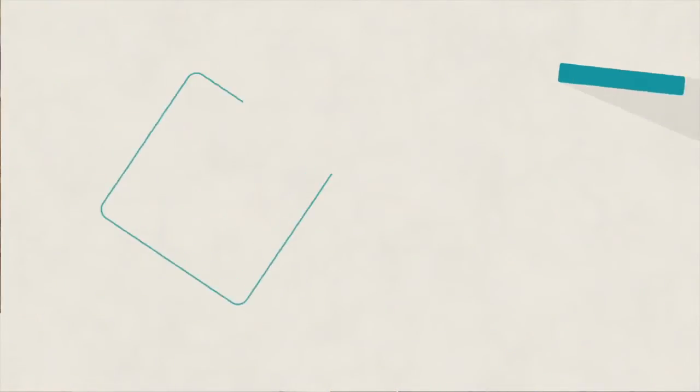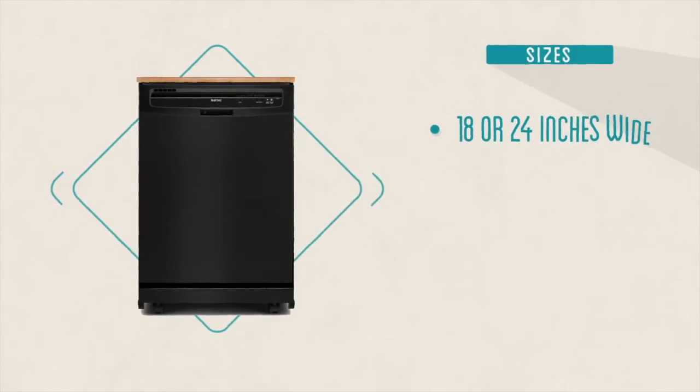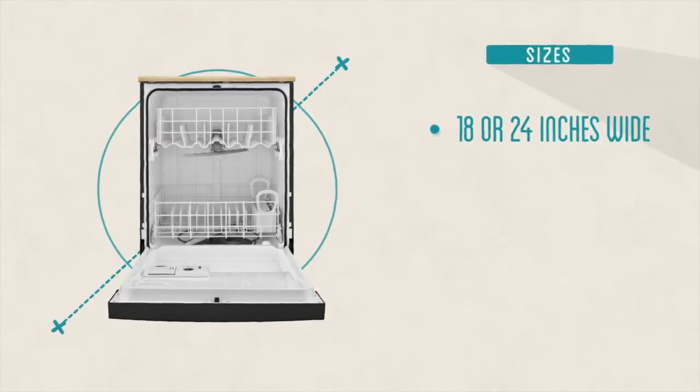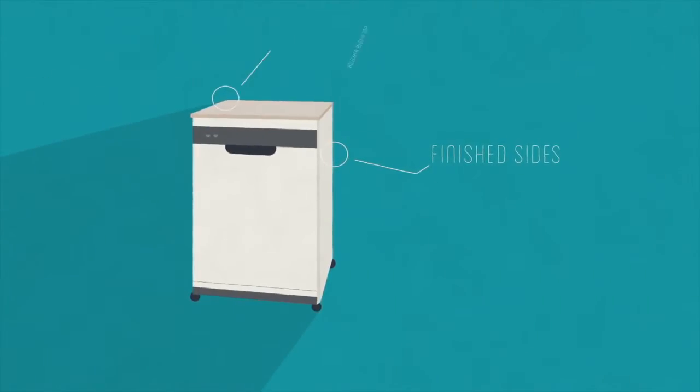They come in two sizes, 18 inch and 24 inches in width, and have interiors that are large enough to accommodate anywhere from 5 to 12 place settings. Portable dishwashers have finished sides with butcher block tops and roll around on casters.